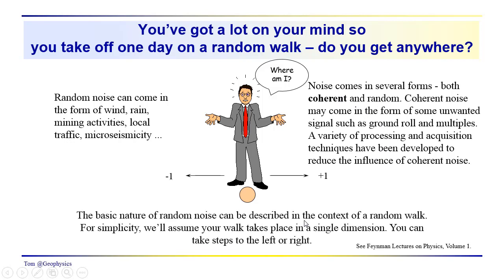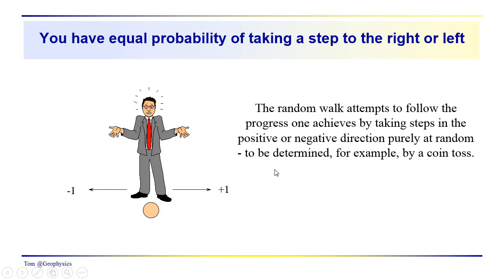We usually try to get rid of coherent noise through specialized acquisition or processing. We have two types of noise - coherent and random. But thinking in terms of random noise, we're going to talk about this in terms of a random walk. We're simplifying by assuming your walk takes place in a single dimension. You can take steps to the left or right. They're unit steps, all the same length, with equal probability. That could be determined by a coin toss.